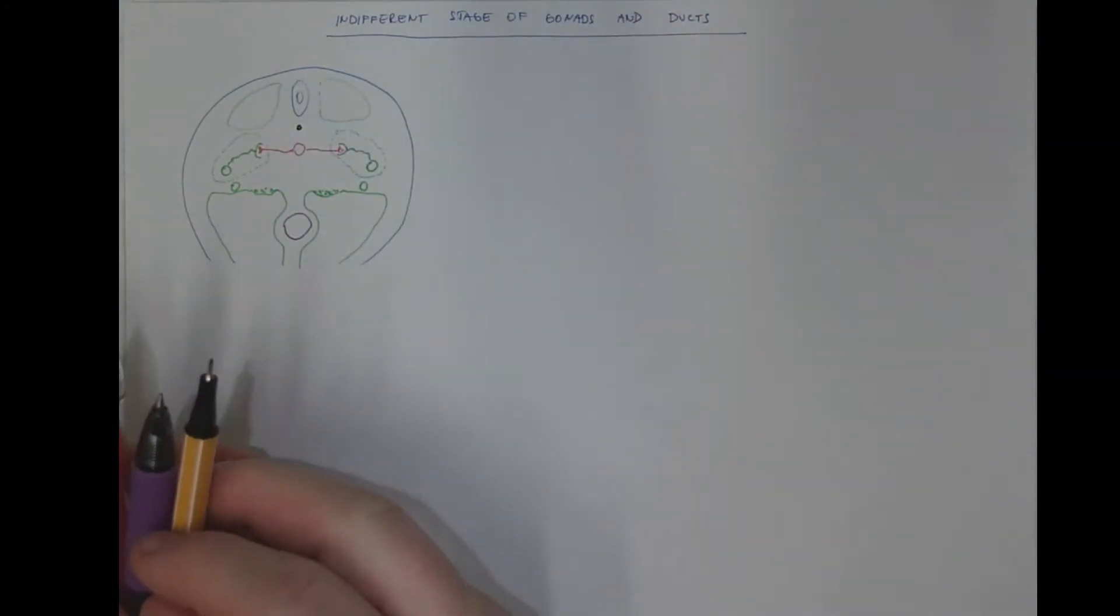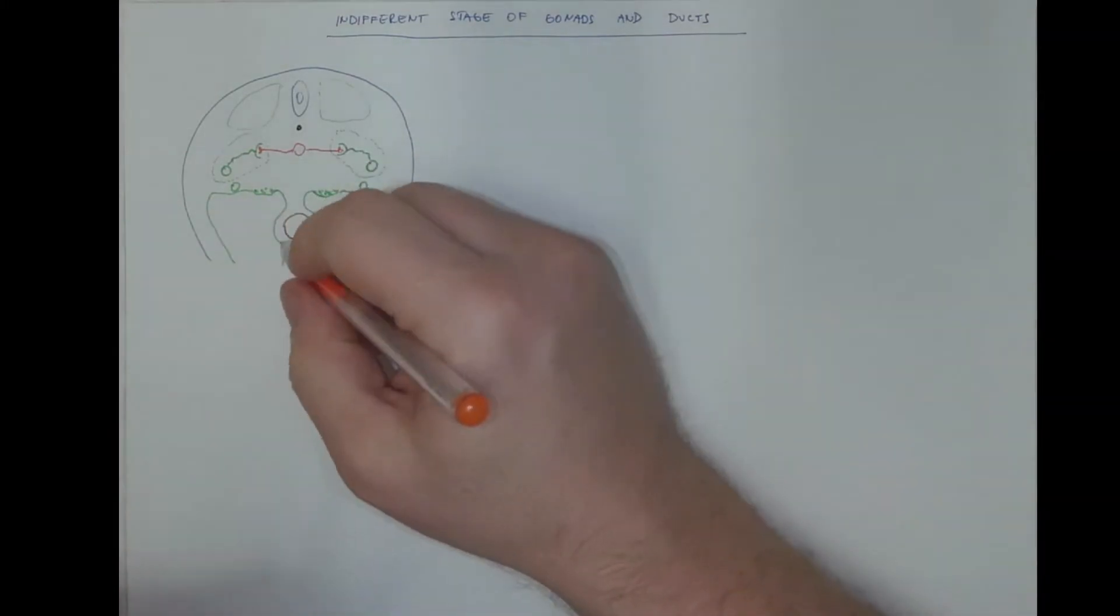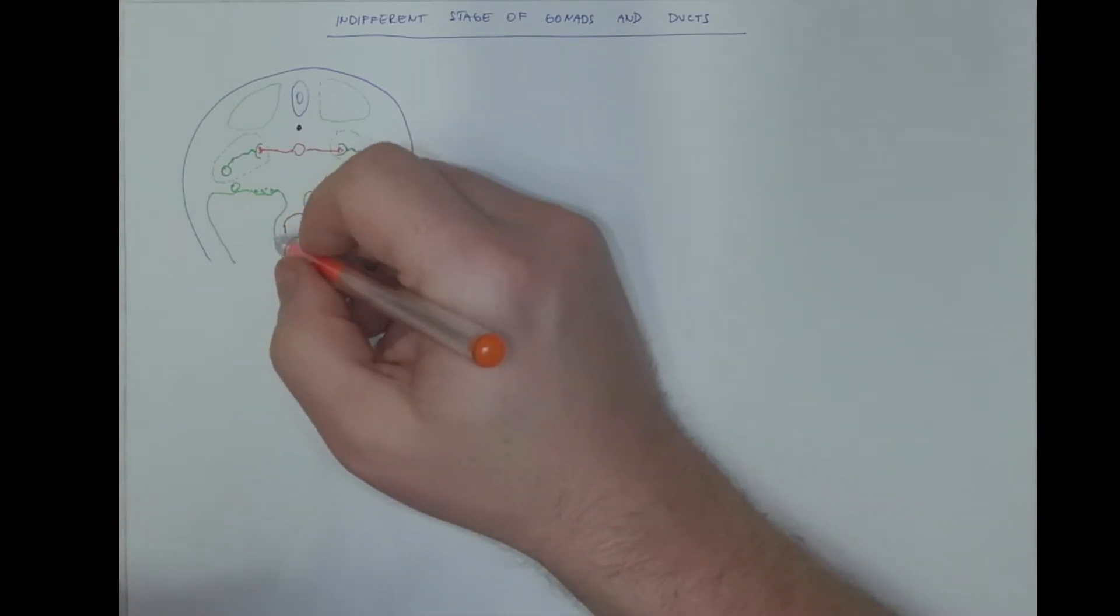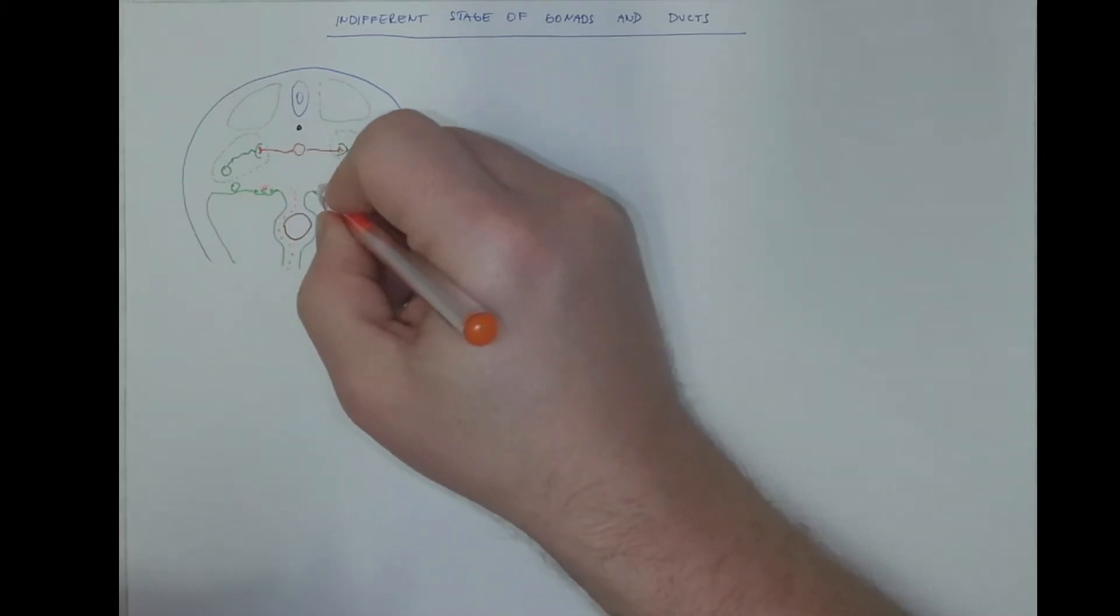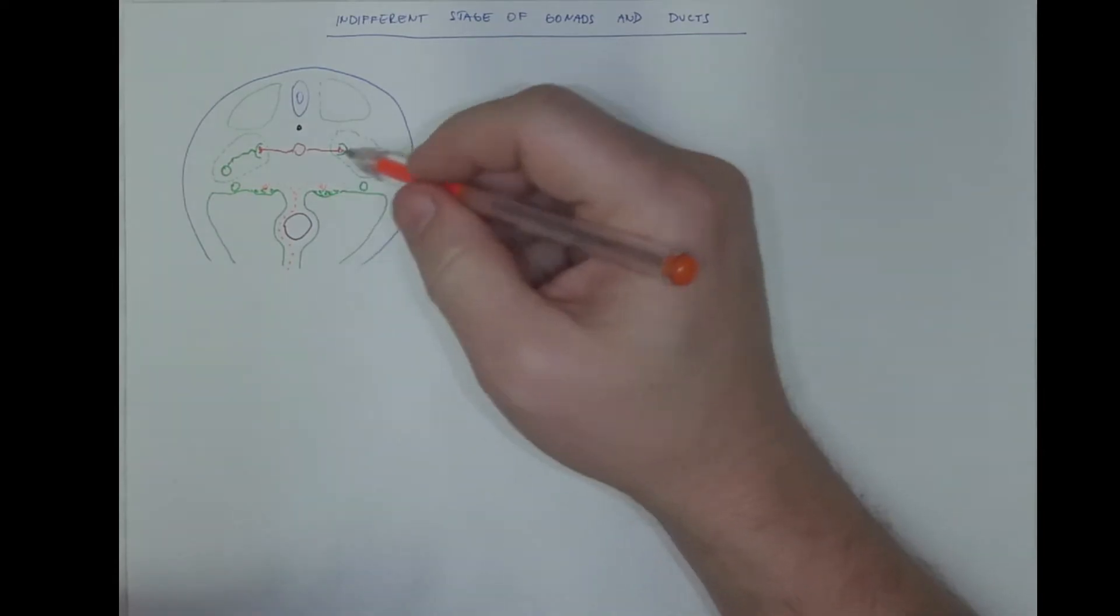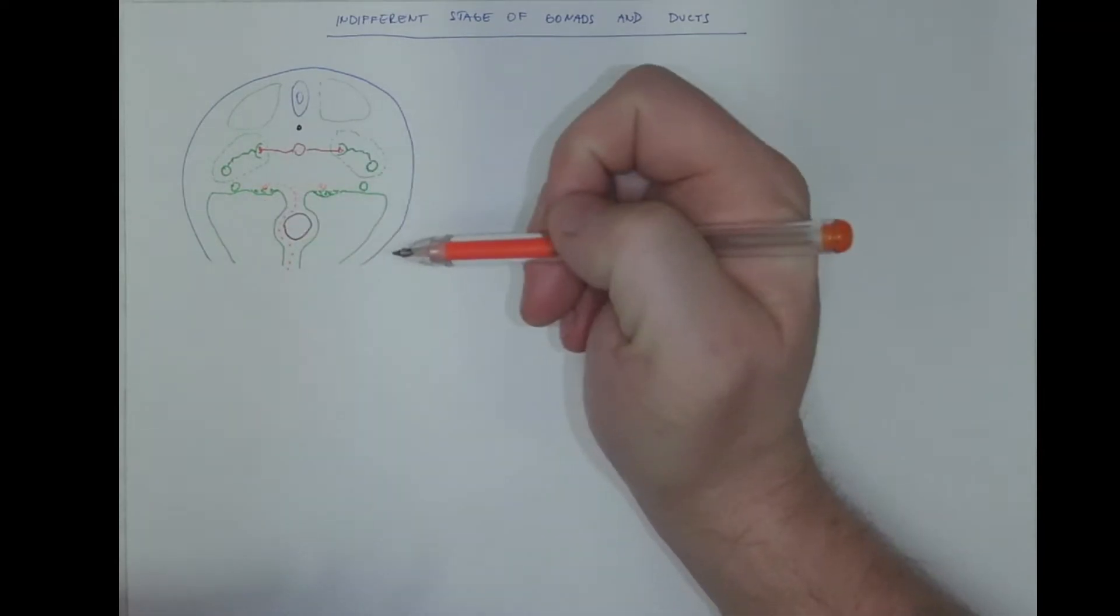The point here I want to illustrate is that the gonocytes, the primordial gonocytes, do not originate in the primordium of the gonad. Instead, they travel from the yolk sac endoderm, through the mesenteries, and they migrate into the gonads. This is a step that is necessary for further proper development and differentiation of gonads. It's also called homing of the gonocytes, as they are finding their home in the gonad.